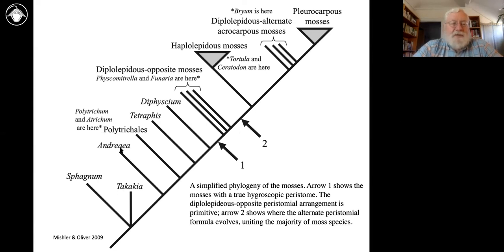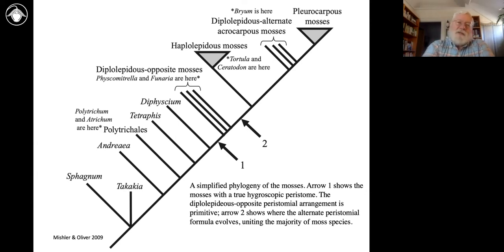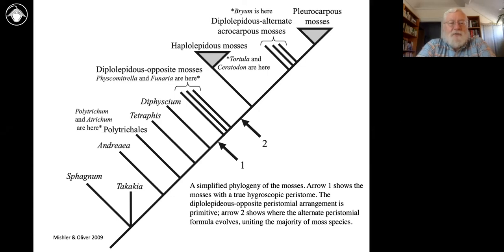Andreaea — the rock mosses — we have them in California. They look a bit like Grimmia, though Grimmia itself is way up in the phylogeny. Andreaea has a lantern-like sporophyte with slits on the side. It's found in the Sierra Nevada on granitic rocks, not uncommon in California at high elevation on the sides of boulders and road cuts, very black in color and with a very strange sporophyte.